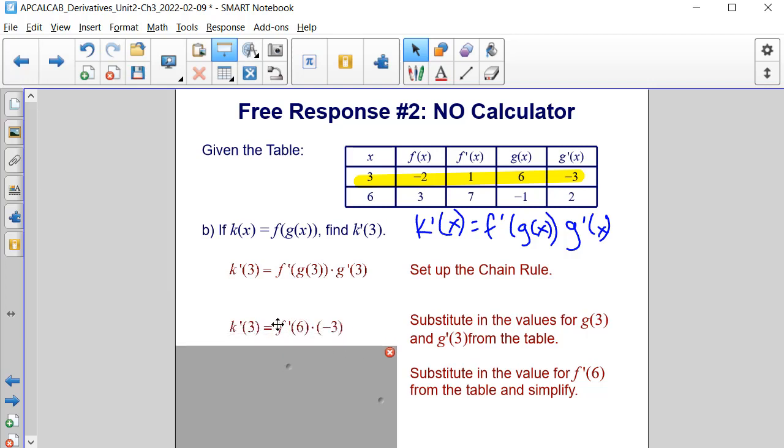And now we have to also use f prime of 6. So that's this value right here. So we need to use f prime of 6, so we put 7 there, times negative 3, which is going to be negative 21. And that's the solution to part B.